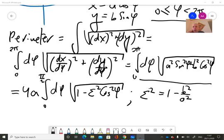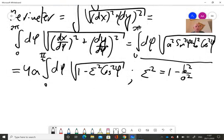And using this parameter epsilon, which is also called the eccentricity, the formula for the perimeter is really simple. We can also simplify it or bring it to a different form by introducing phi tilde equals pi over two minus phi.